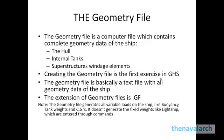The extension of geometry files is .GF. One very important aspect of this geometry file is that it generates all the variable loads on the ship — loads which change with changing motion, such as buoyancy, which changes when the ship heels or trims, and tank weights which change with heel and trim. However, the geometry file does not generate fixed weights like lightship; these are entered through commands in the run file.